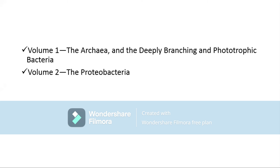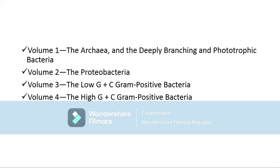Our target today is the second edition of Bergey's Manual. This second edition is divided into five different volumes. Although all five volumes are organized based on gram staining reactions, inside each volume all organisms are placed phylogenetically. Volume 1 comprises Archaea and phototrophic bacteria. Archaea are a unique group, called extremophiles because they are mostly found in extreme environmental conditions and can survive and sustain there. They are gram negative in nature.